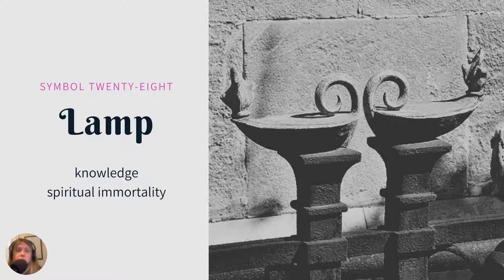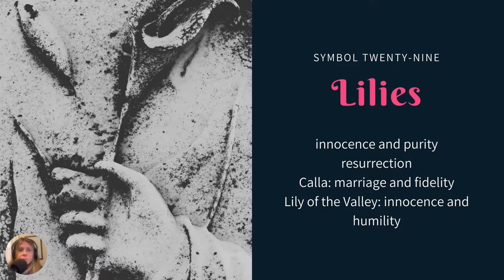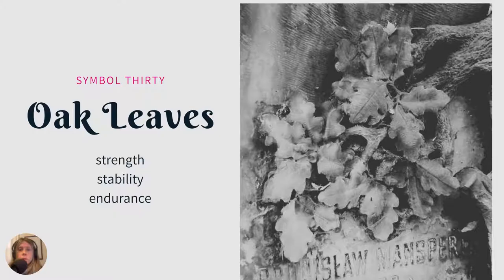A lamp represents knowledge and spiritual immortality. This carving shows two lamps with flames — it looks like it's on a gate surrounding a tombstone. Lilies — this is a hand holding calla lilies, one open and one closed. Calla lilies specifically meant marriage and fidelity. More generally, lilies represent innocence and purity, resurrection, or — as a lily of the valley — innocence and humility.